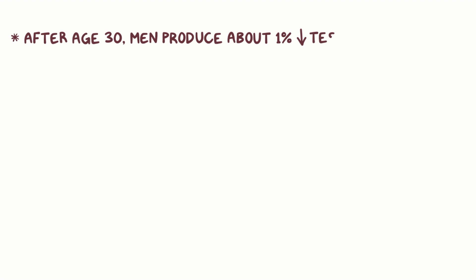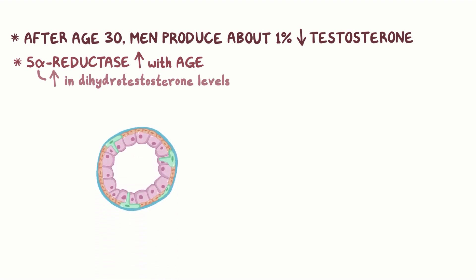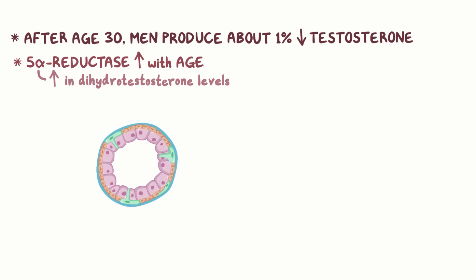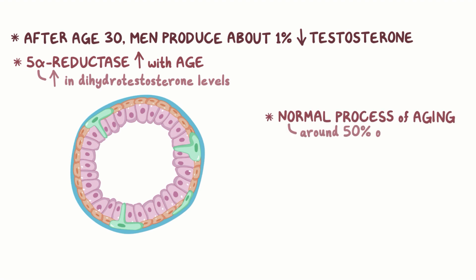After the age of 30, men produce about 1% less testosterone per year. But for unclear reasons, 5-alpha reductase activity increases with age, so even with less testosterone, there can be an increase in dihydrotestosterone. Normal prostate cells respond to the increase in dihydrotestosterone levels by living longer and multiplying, and that's the underlying cause of benign prostatic hyperplasia. This is a normal process of aging, and around 50% of men develop BPH by the age of 60, and over 90% have it by the age of 85.